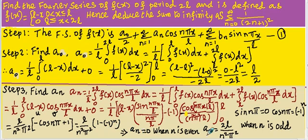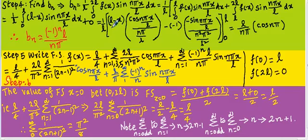Step number 4 is to find the value of bn. bn equals 1/L times the integral from 0 to 2L of f(x)·sin(nπx/L) dx. The function is defined over two intervals. We write: 1/L times the integral from 0 to L of f(x)·sin(nπx/L) dx plus the integral from L to 2L, where f(x) = 0, so that term becomes 0.